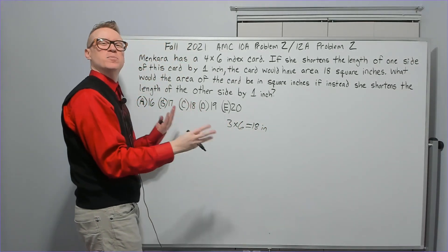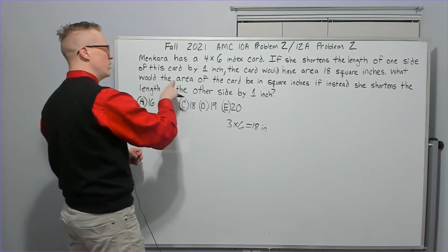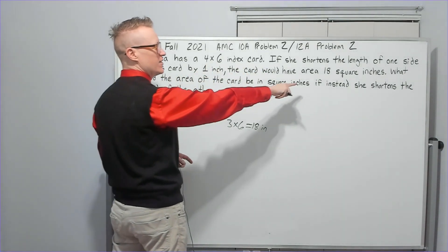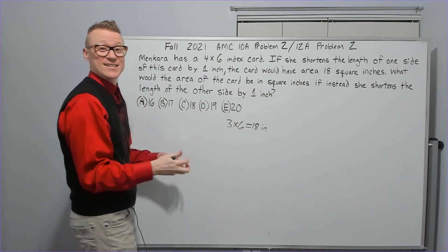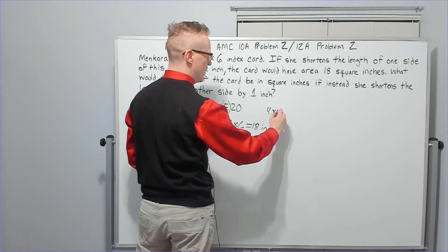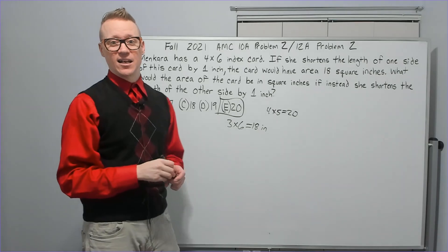I like to process as I read, not read the whole thing. What would the area of the card be if instead she shortens the length of the other side by one inch? We already did that. That's the four by five. That's going to be 20. That's the answer. Let's get on to problem three.